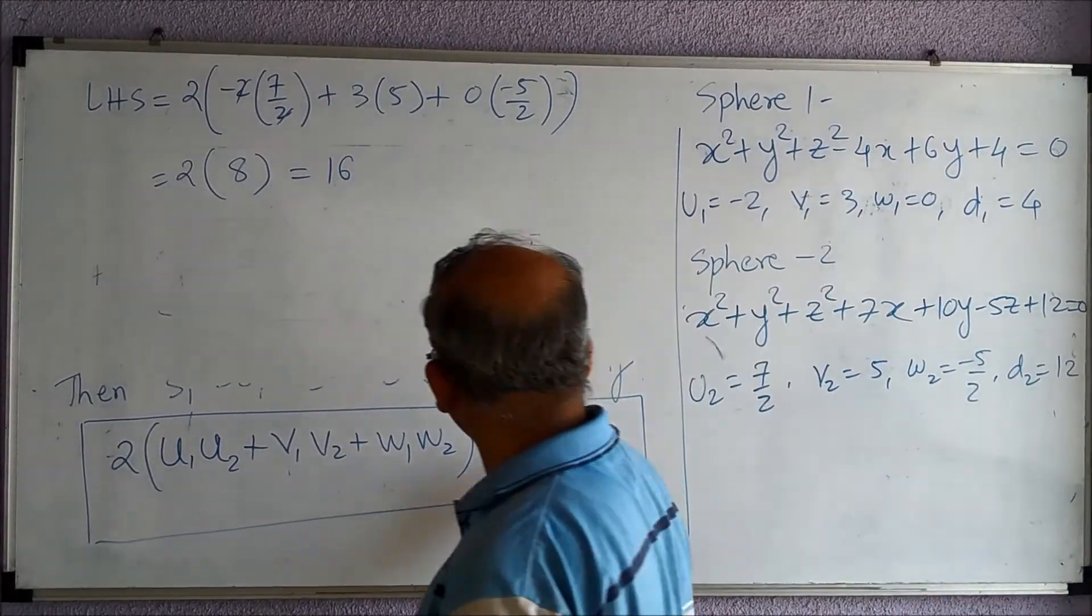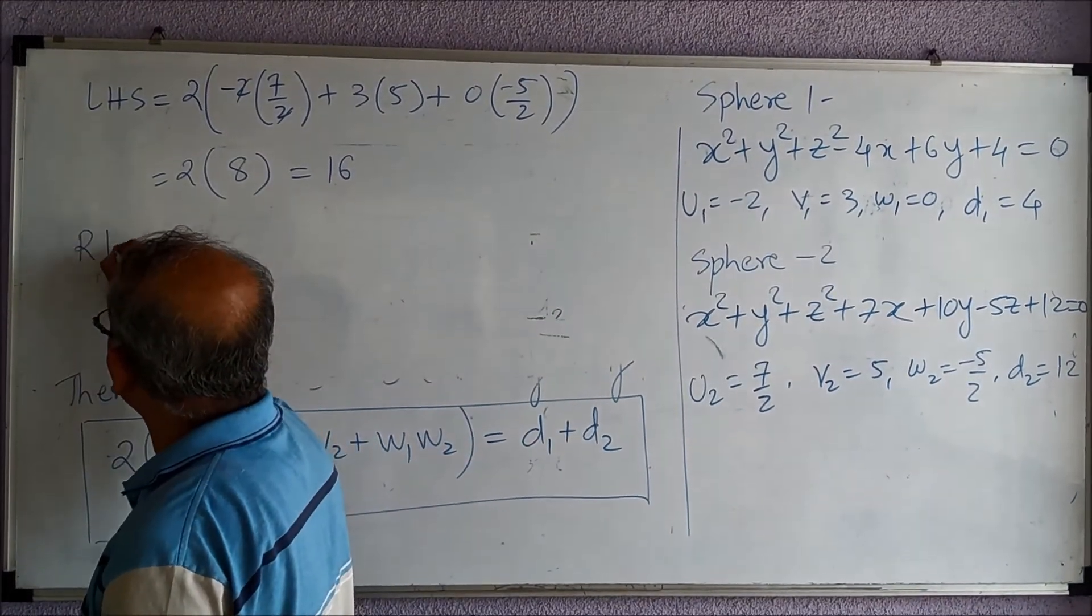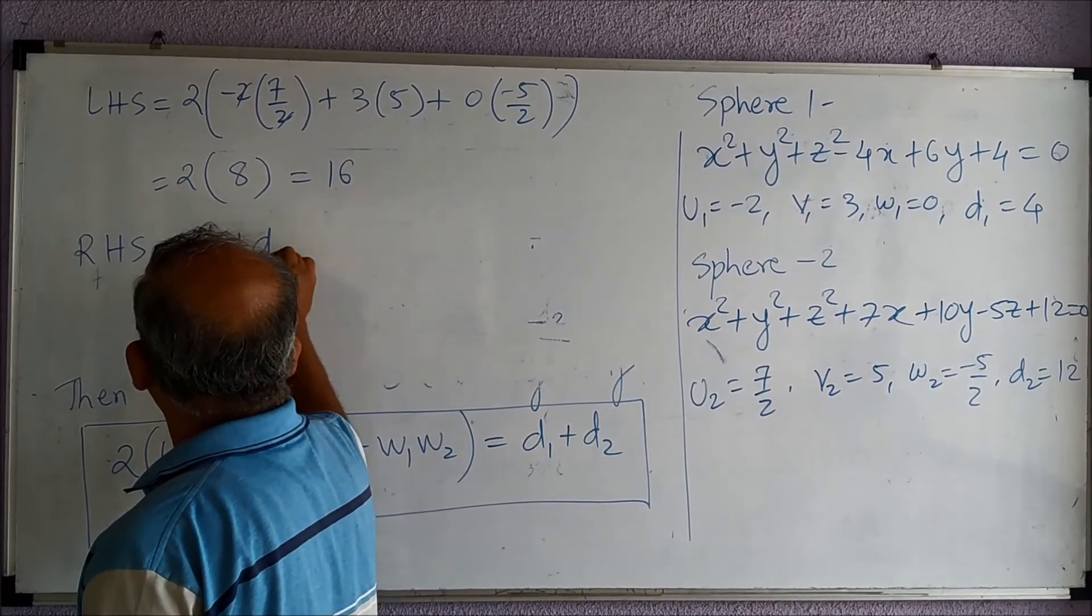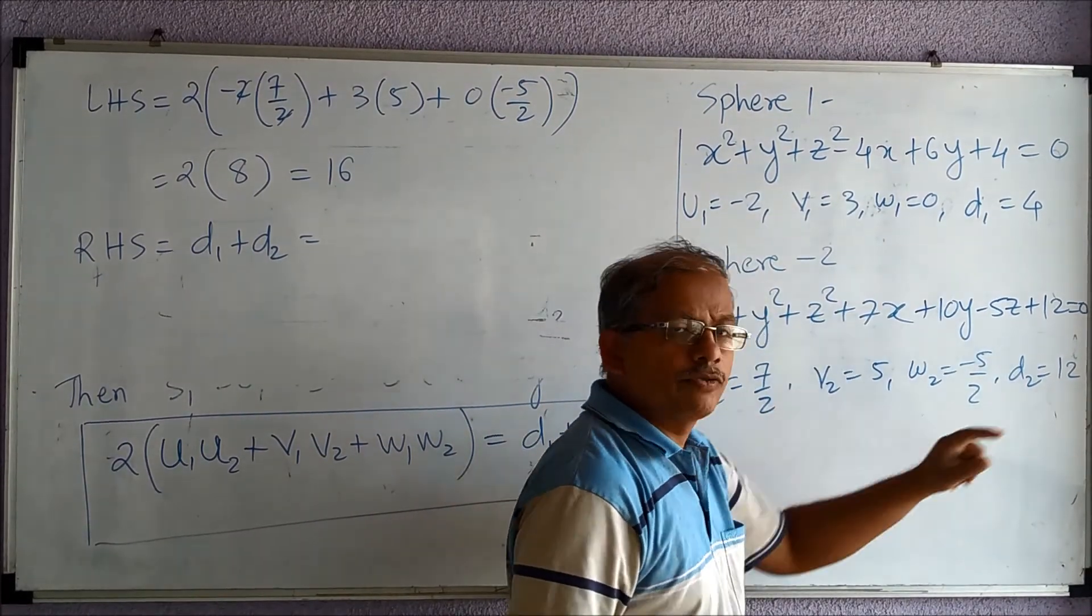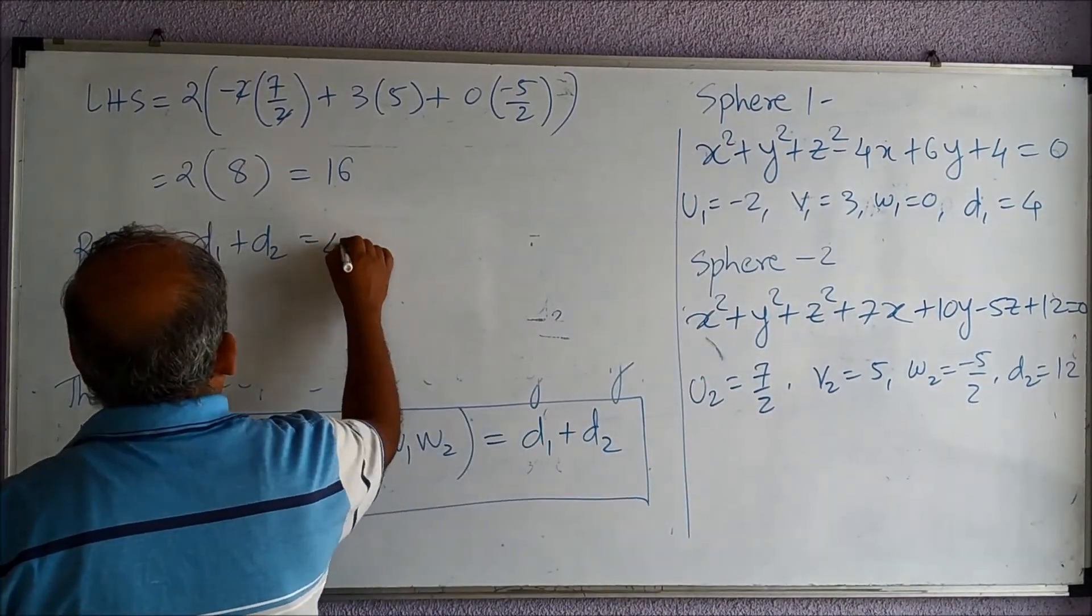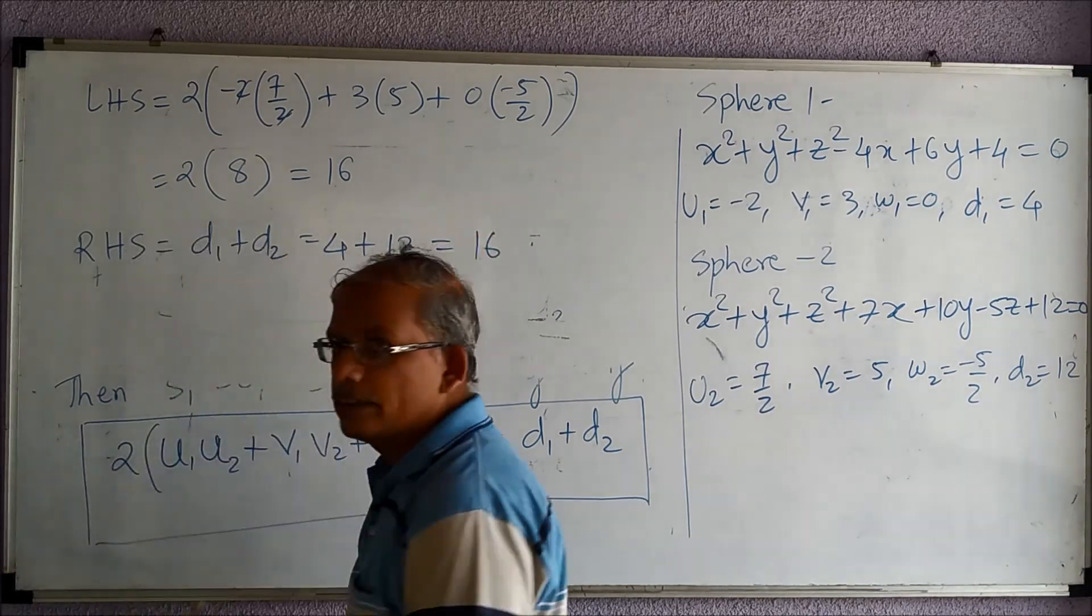And what is the RHS? It is d1 + d2. You can easily observe that d1 is 4, d2 is 12, so 4 + 12 is also equal to 16.